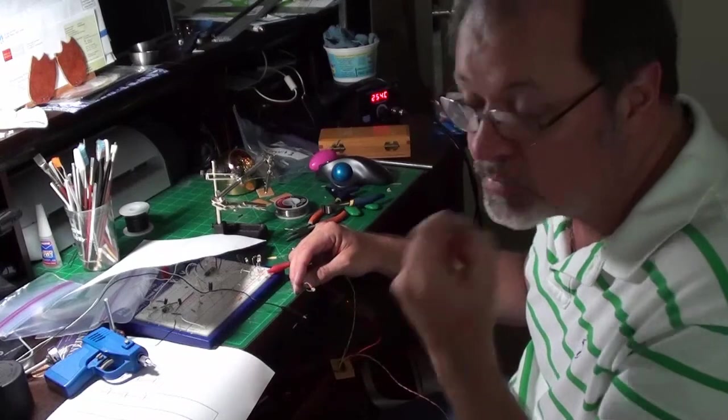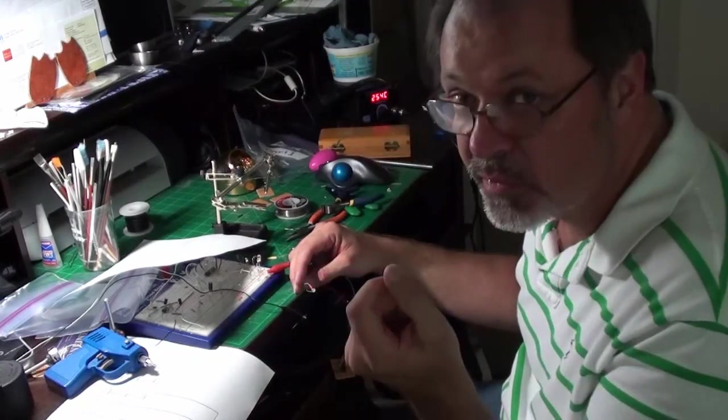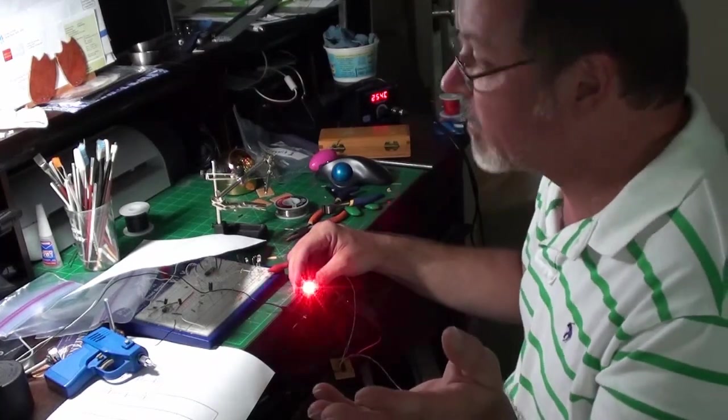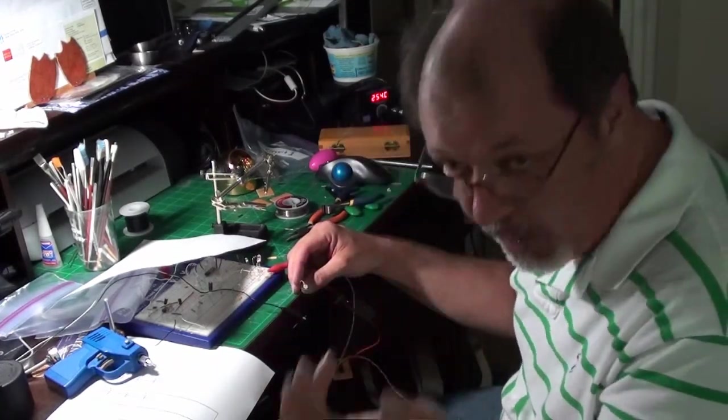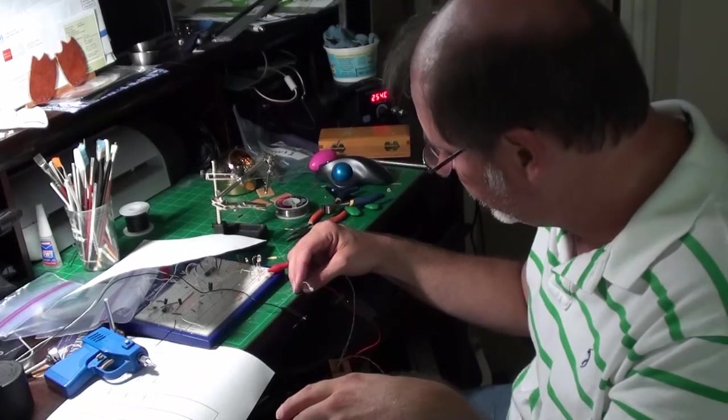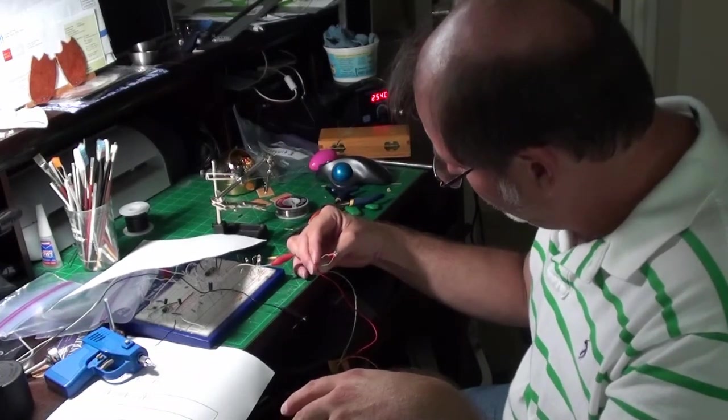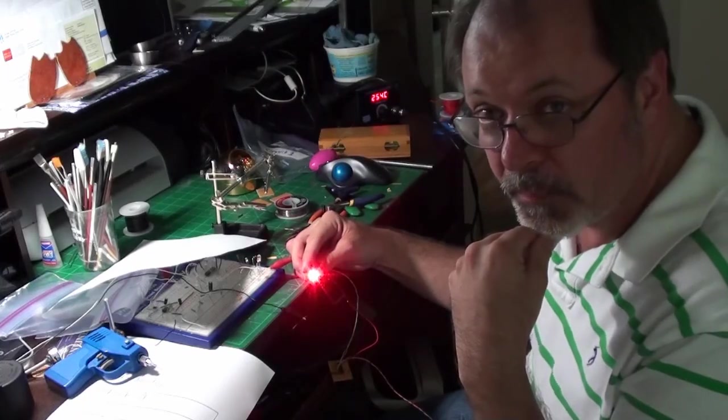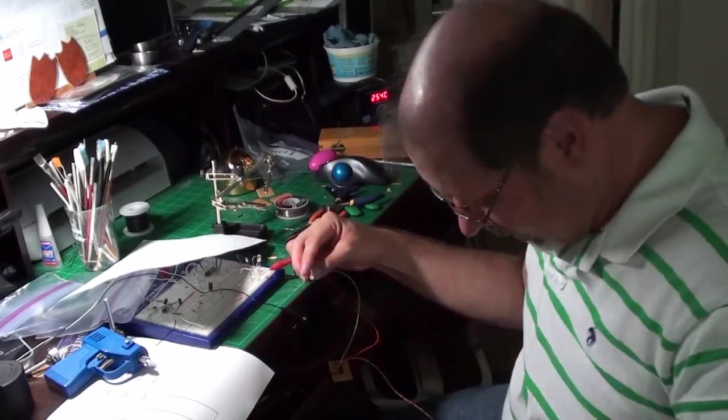The only thing that won't be copper is my power leads because I want to stay consistent with them, so I don't have like one brown and white is positive and negative on one circuit, and then a blue and white is positive and negative on another circuit. I'm going to get busy on this other one. I'll be back in a little bit.